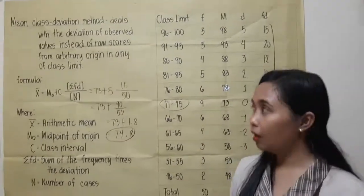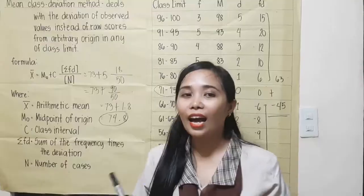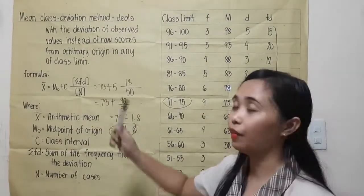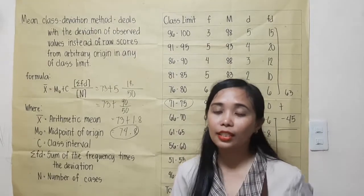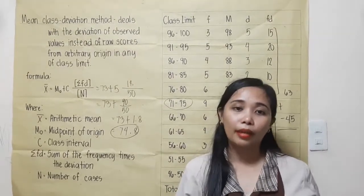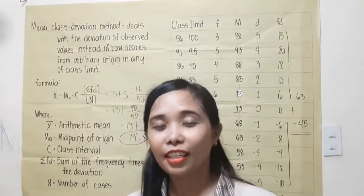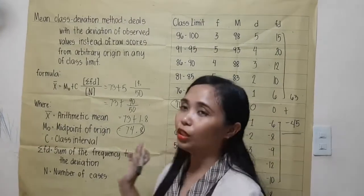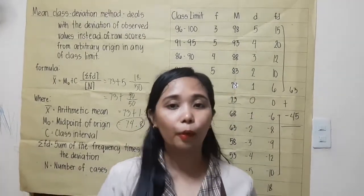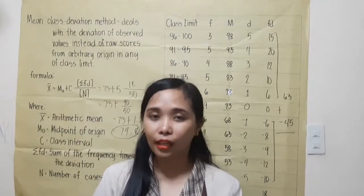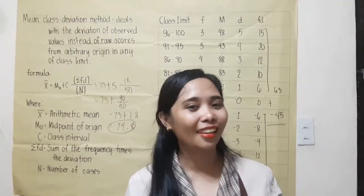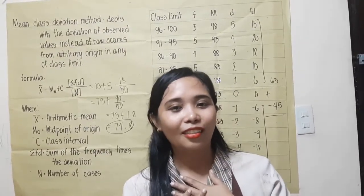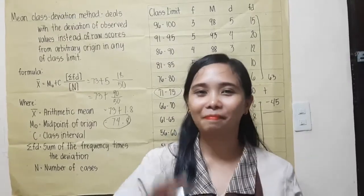As you can see, the mean value obtained using the class deviation method is the same as the mean from the midpoint method. So, what is the easier method to use? It's up to you — whether it is the mean class deviation method or the midpoint method, the answer is the same. That's it for today. I hope you learned something. Again, I'm Macy S. Papa, BS Edmat Major. Thank you and keep safe everyone. Bye!